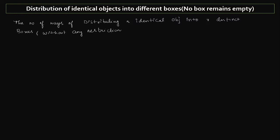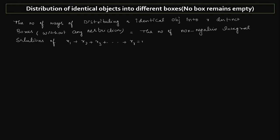The meaning is: the box may be empty or may not be empty — each and every box contains any number of objects, there is no restriction. The number of ways of distributing n identical objects into r distinct boxes without any restriction is the same as the number of non-negative integral solutions of the linear equation x1 + x2 + x3 + ... + xr = n, which is n+r-1 C r-1. We have seen this in the last class.